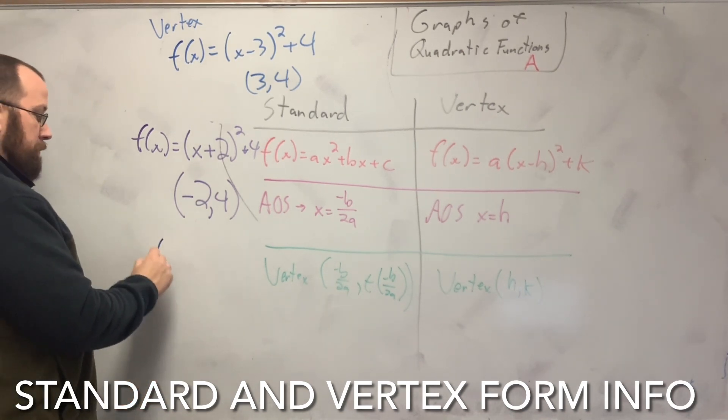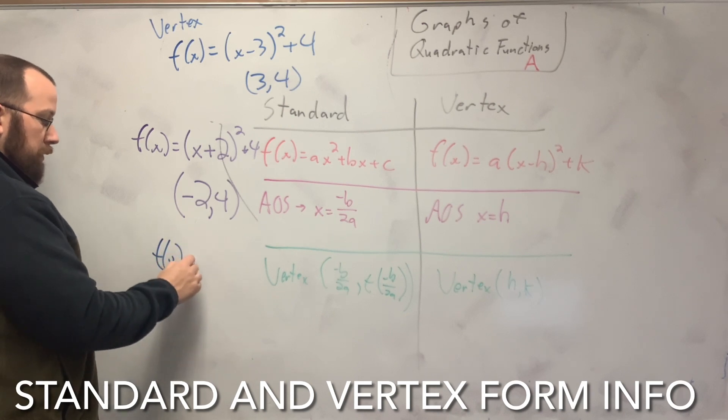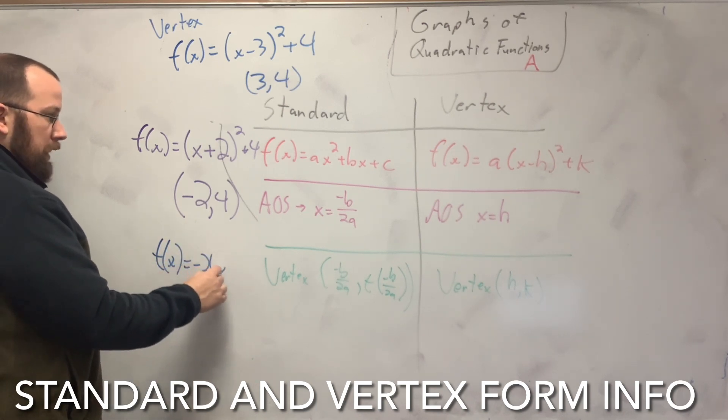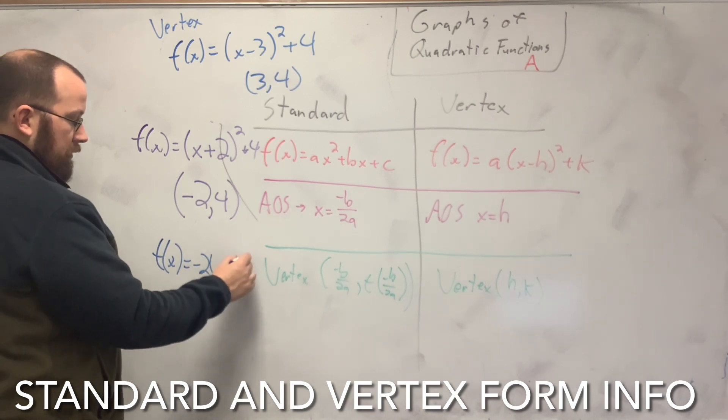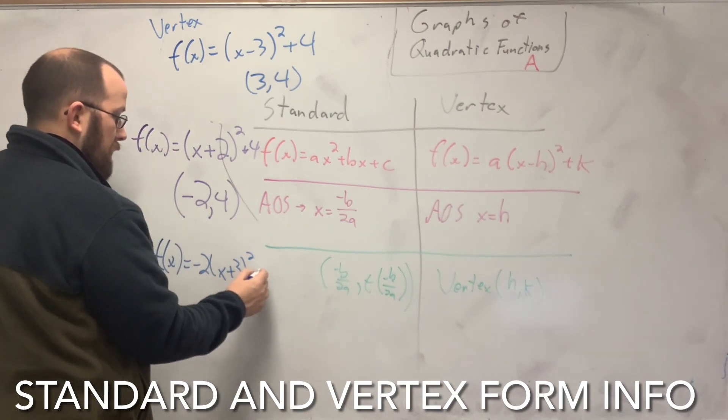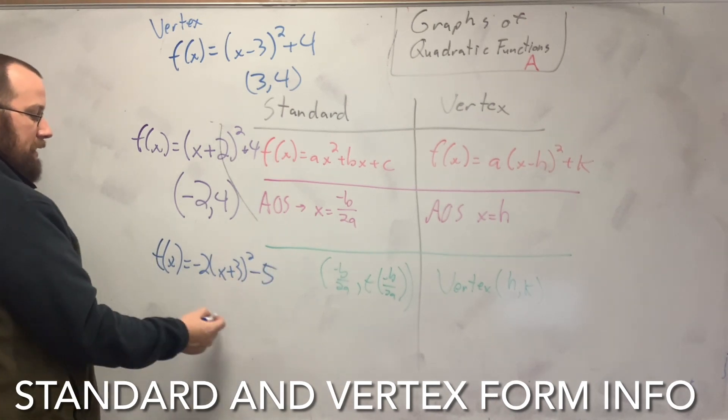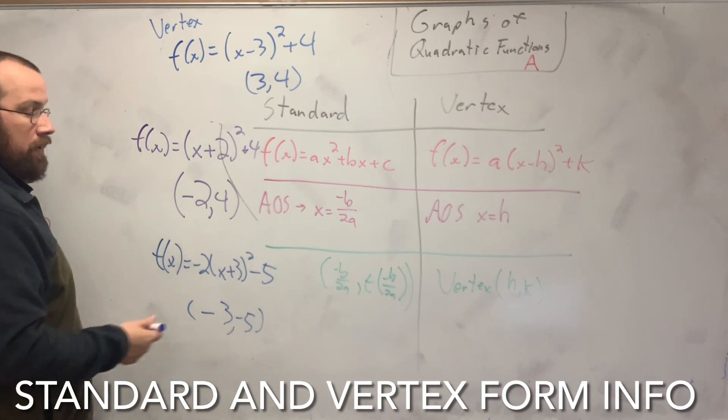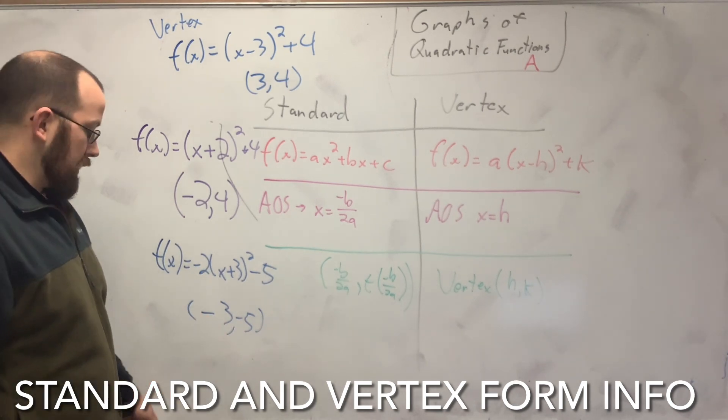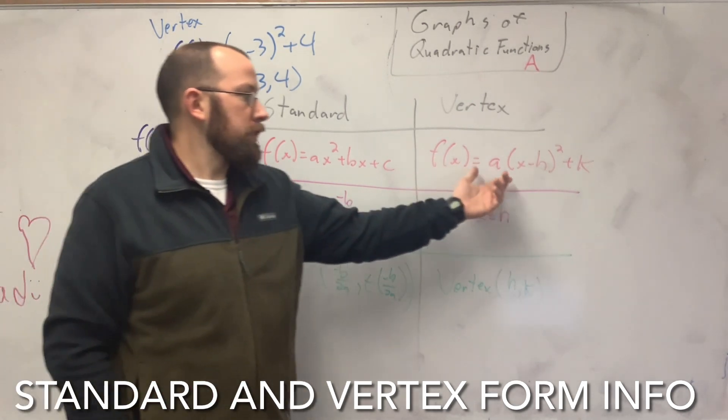And the last example, if I have f(x) equals negative 2x plus 3 squared minus 5. Since that's positive, when I take it out from the vertex, it becomes negative. So negative 3, negative 5. So that's the main thing you find from the vertex form.